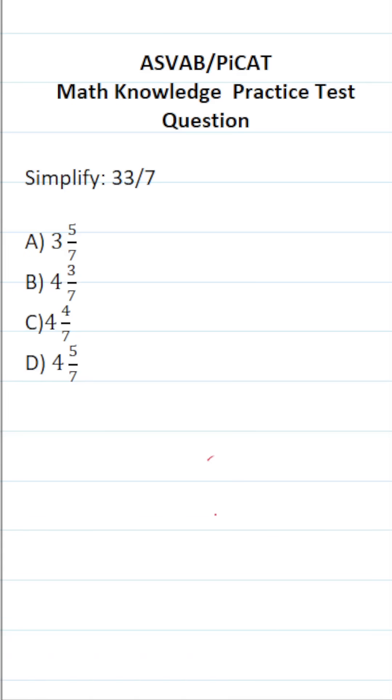This math knowledge practice test question for the ASVAB and PICAT says simplify 33 over 7. So 33 over 7, in case you haven't dealt with fractions in a long time, is called an improper fraction.